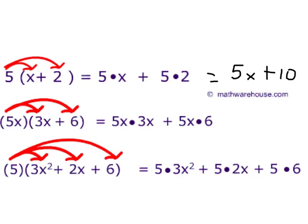Here we have 5x distributed across 3x and across 6. So we have 5x times 3x plus 5x times 6. And when we do the math, that would equal 5 times 3 is 15, x times x is x squared, and 5x times 6 is 30x. So plus 30x.